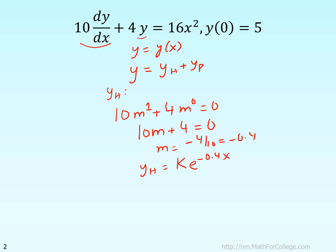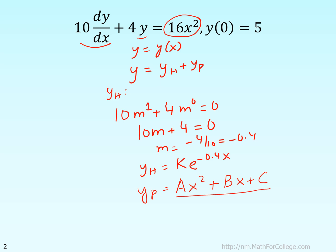Now let's find the particular part. For the particular part, you have to think about what is the form of the right-hand side forcing function and what are all its possible derivatives — that becomes the form of the particular solution. It will be ax squared; the derivative of x squared is 2x, so we include b·x; the derivative of x is a constant, so we include c. The derivative of a constant is 0, so nothing more to add. That is the form of the particular solution, unless any part of it matches the homogeneous solution, which is not the case here.